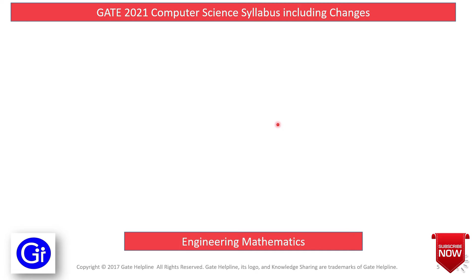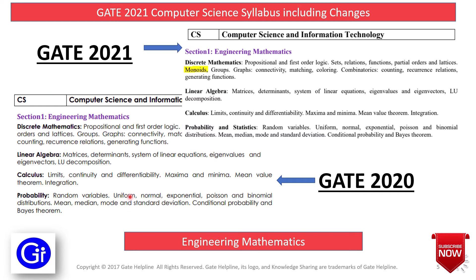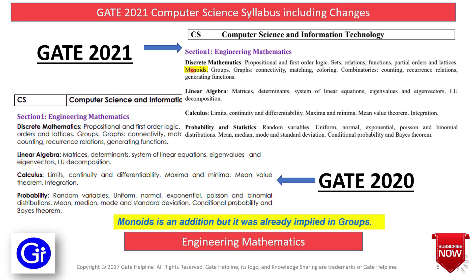Let's start with Engineering Mathematics. The GATE 2020 syllabus is divided into 4 parts: Discrete Mathematics, Linear Algebra, Calculus, and Probability. In GATE 2021, the syllabus is the same but now includes Statistics as well. The only difference is the addition of Monoids, which provides in-depth description. Monoids were already implied in groups, so they have added more depth and clarification into the groups topic of Discrete Mathematics.